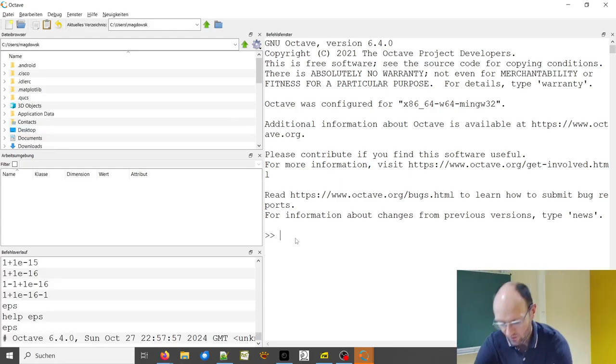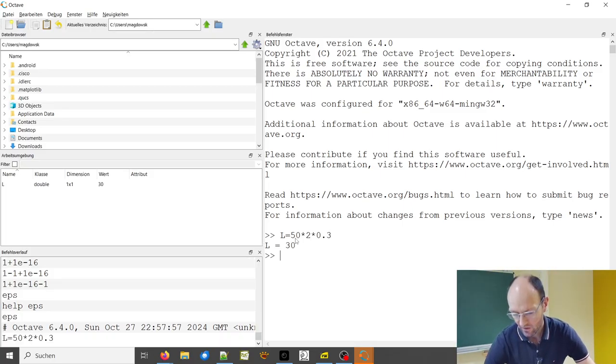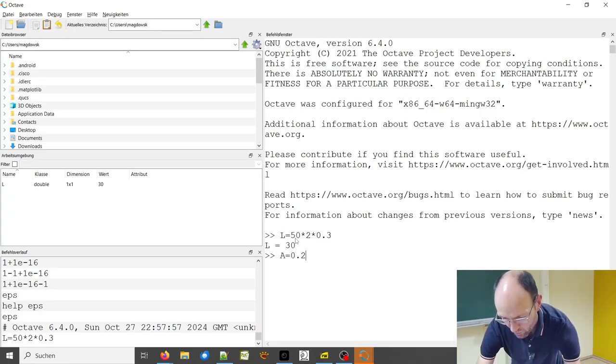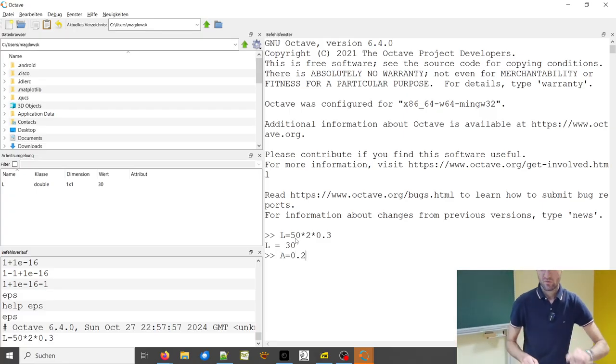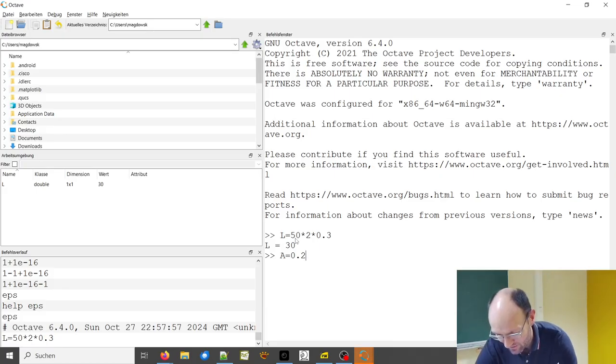So length is 50 times 2 times 0.3, right? And cross section area was 0.2 square millimeters. So how can I convert square millimeter into square meter? Well, we don't need to if we have the proper unit for the conductivity. Then we would just leave it like this.